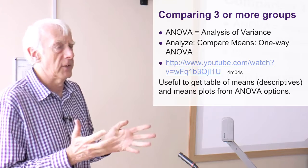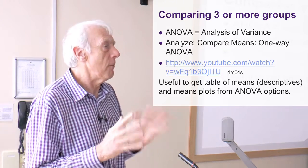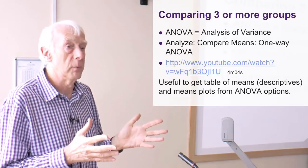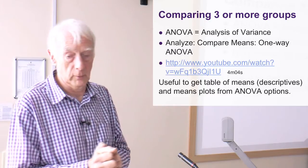It doesn't make a lot of sense to compare 20 groups. I mean, honestly, that won't help you very well. But if you've got, you know, perhaps four or five groups, ANOVA is a good way of comparing those different groups.